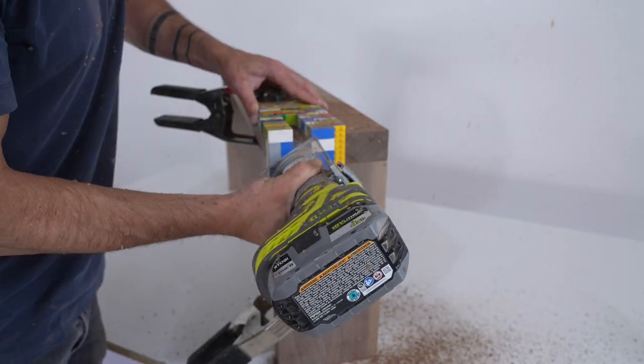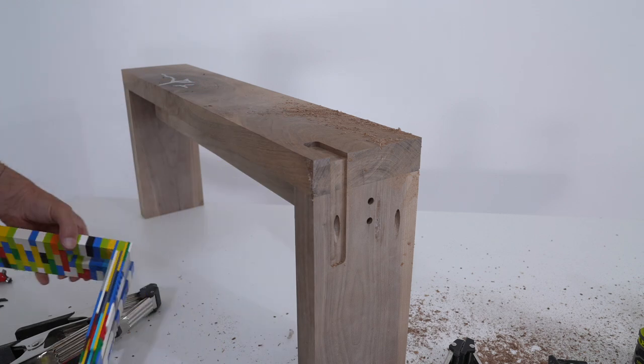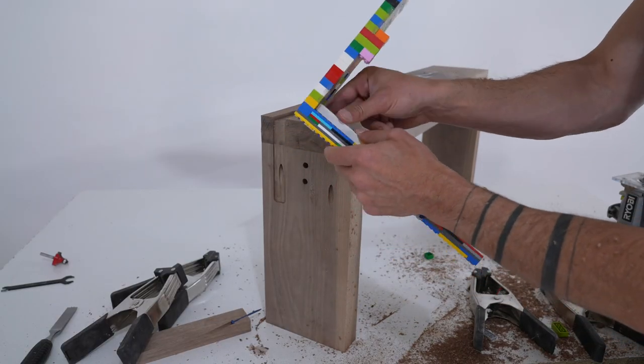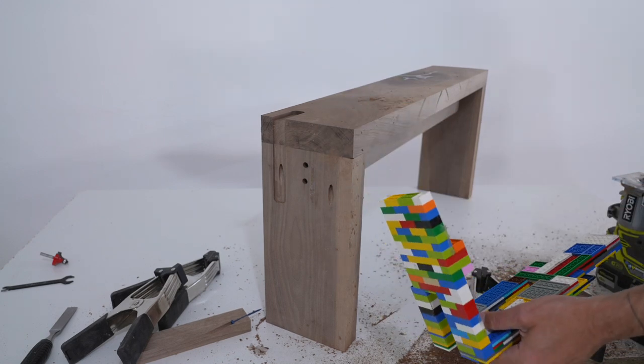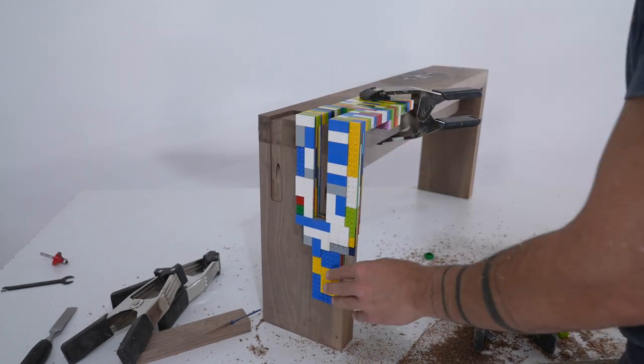I'm really intrigued by this idea of using something modular like LEGO to make router templates. And what was handy about this application is that I could use stop blocks so they could have the same distance for these routed grooves on either side of the bench. Just three dots in.